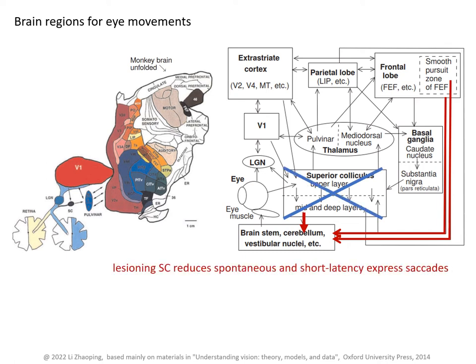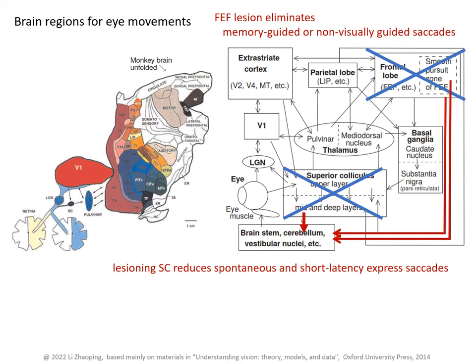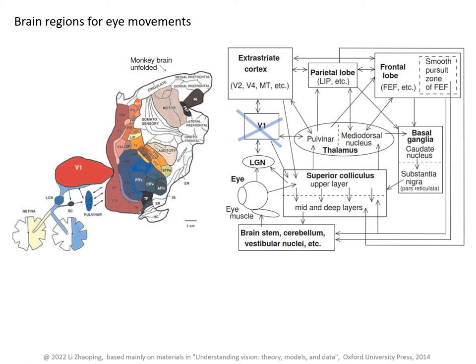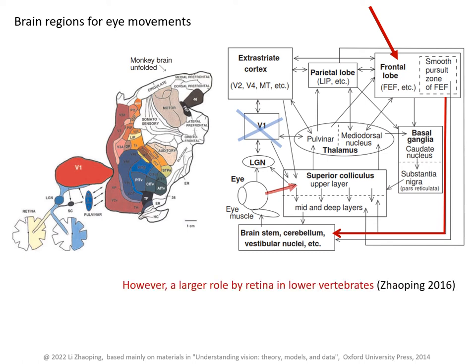If one lesions the superior colliculus, the number of spontaneous saccades is reduced and short-latency saccades called express saccades are eliminated. Lesioning the frontal eye fields makes memory-guided saccades difficult and makes an animal unable to move its eyes in response to verbal commands, even when the animal can follow visual objects with saccades and can understand those verbal commands. Lesioning V1 abolishes all visually guided saccades until two months after the lesion, although the animal can still do memory-guided saccades, presumably via the frontal eye field. This suggests that direct retinal inputs to the superior colliculus are normally not sufficient to drive eye movements in monkeys.